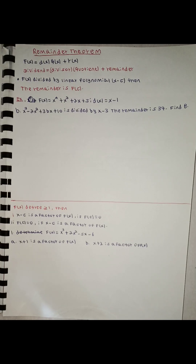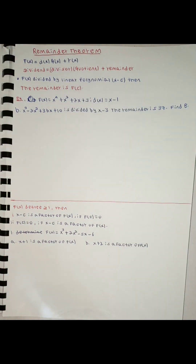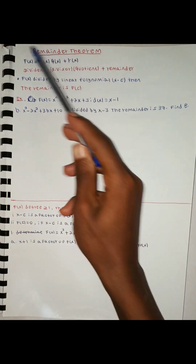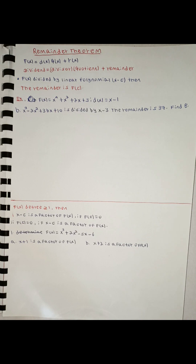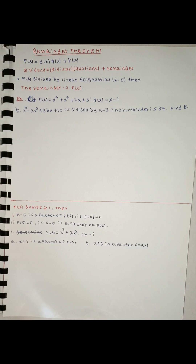I'm going to show you a video on the remainder theorem. f of x is equal to d of x times q of x plus r of x. f of x degree is not equal to d of x degree. So, what is the remainder theorem?